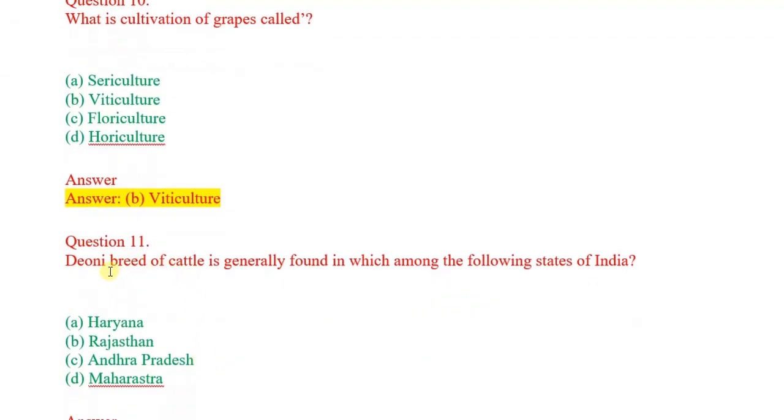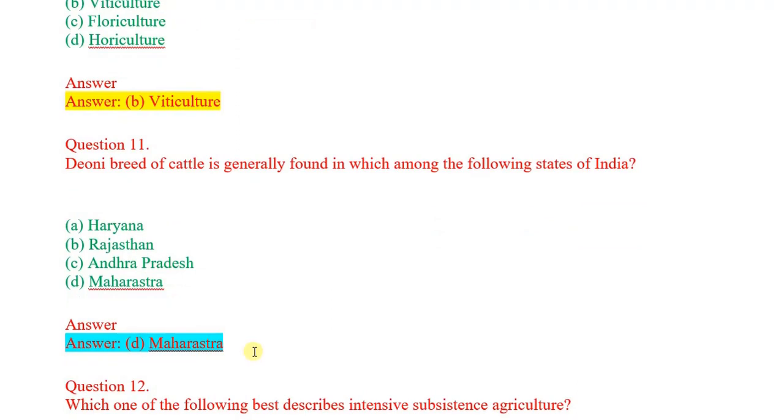Question number 11: Dangi breed of cattle is generally found in which among the following states of India? Options: Haryana, Rajasthan, Andhra Pradesh, Maharashtra. Correct answer: Maharashtra.